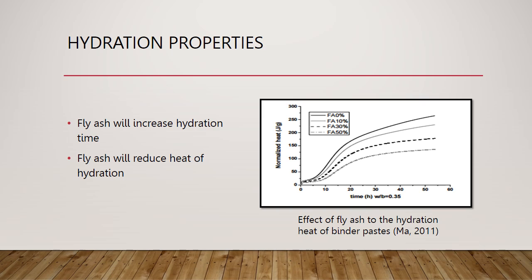This section of the presentation is a discussion about the mechanical properties of fly ash concrete, beginning with the hydration properties. Fly ash has a notable effect on the hydration process of concrete. Fly ash reacts slowly with water; the slower, less intense reaction causes less heat to be produced at once. As seen in this chart, the more fly ash is added, the slower the reaction is, and therefore the lower the heat released. This is different than Portland cement, which has a very quick reaction — a sharp spike compared to the gentle curves of this graph.